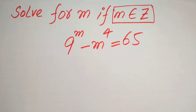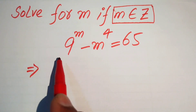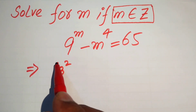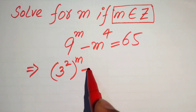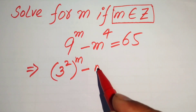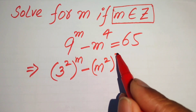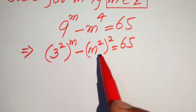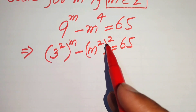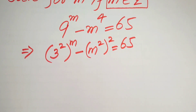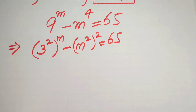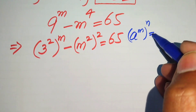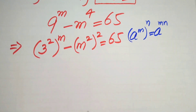The first step is to focus on the 9 and write it in prime factor form. The prime factors of 9 are 3 squared, so the equation becomes 3 squared to the power of m minus m squared whole squared equals 65. We use the exponential law: a to the power of m to the power of n equals a to the power of m times n.